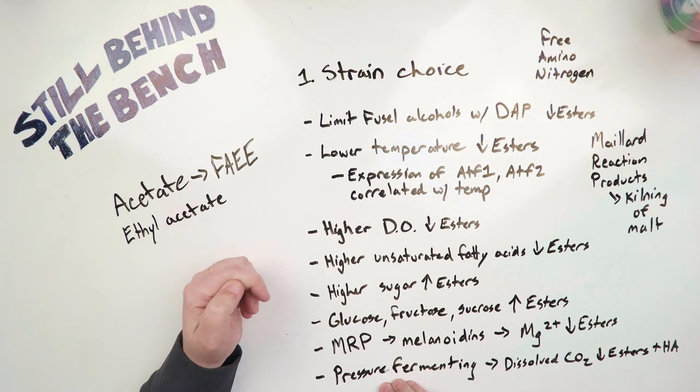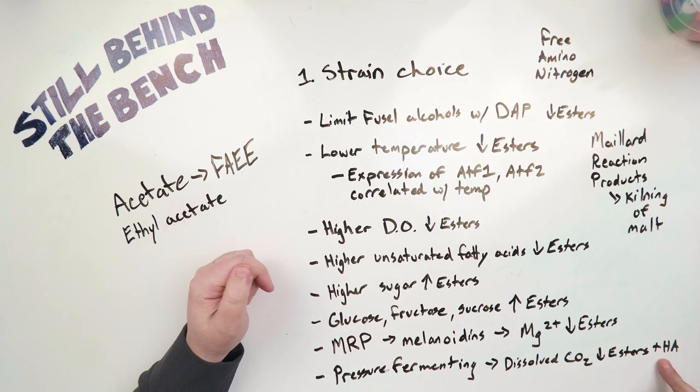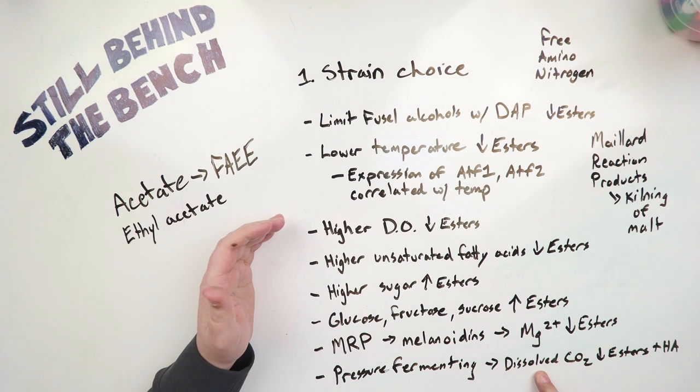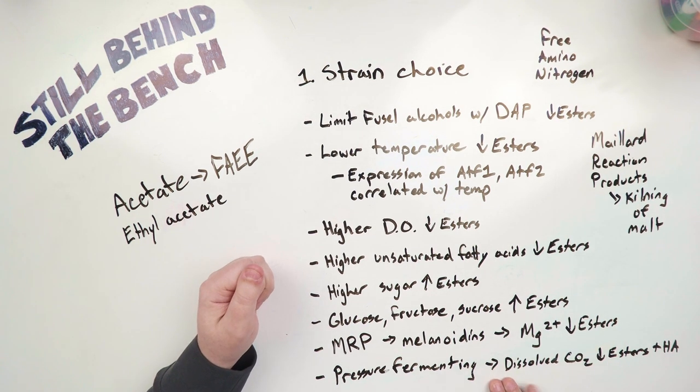So the last one is pressure fermenting. And this one really surprised me. So first off, it's not the pressure that's actually lowering the ester production. The result of fermenting under pressure causes the dissolved CO2 concentration to increase. And it's this increased dissolved CO2 that causes the drop in esters. It actually also causes a drop in higher alcohols or fusel alcohols, which also causes a drop in ester. So the reason this happens is that dissolved CO2 is both a growth inhibitor, but it's also an ester enzyme inhibitor. These enzymes are inhibited by higher concentrations of CO2. And the quantities of inhibition I've seen, or that I've read, from multiple studies are as high as 40 percent.